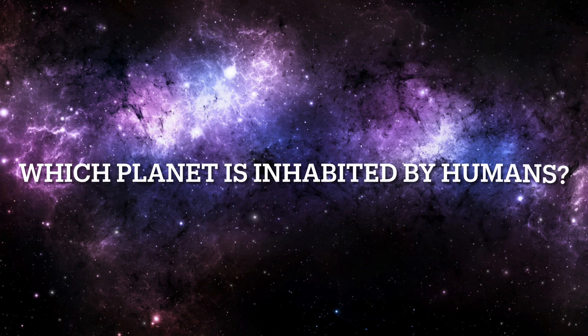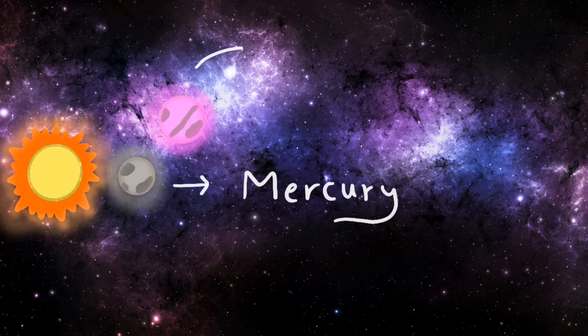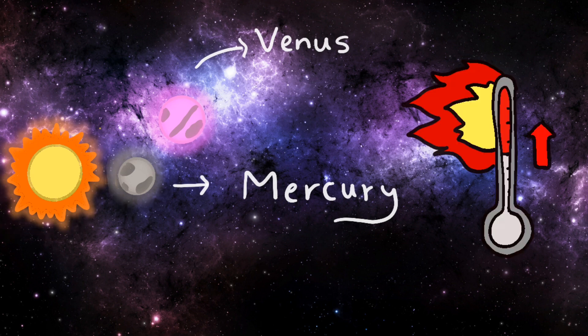Which planet is inhabited by humans? Mercury and Venus are too close to the Sun to support human life. Both Venus and Mercury experience extremely high temperatures, surpassing the melting point of lead.